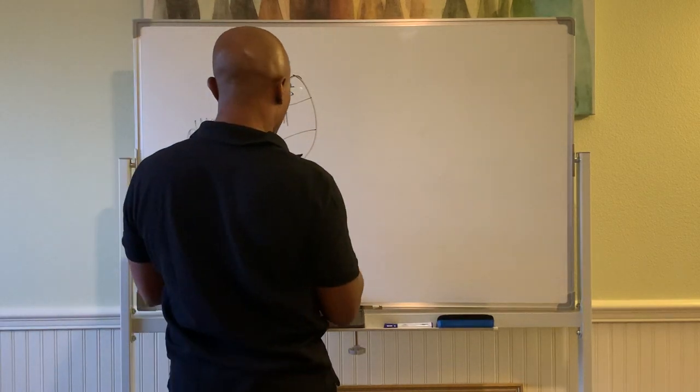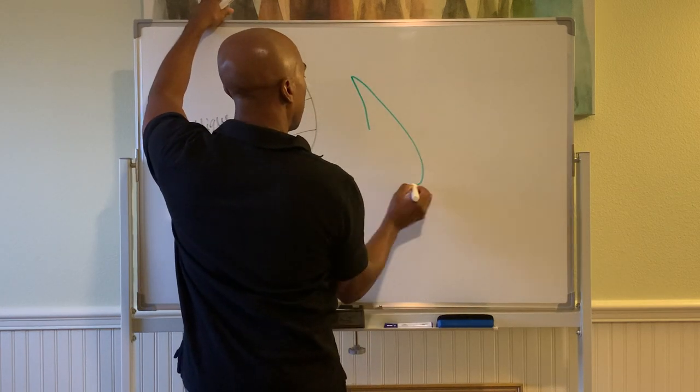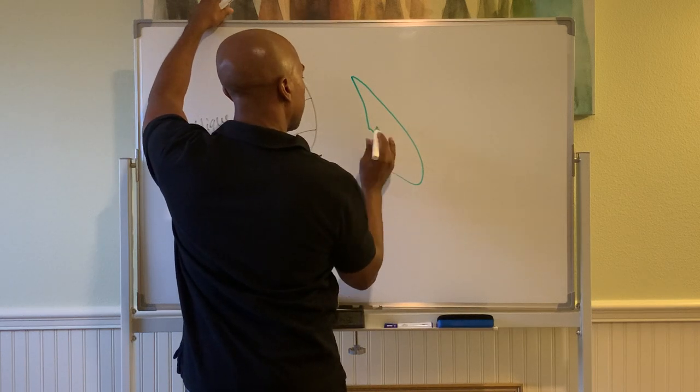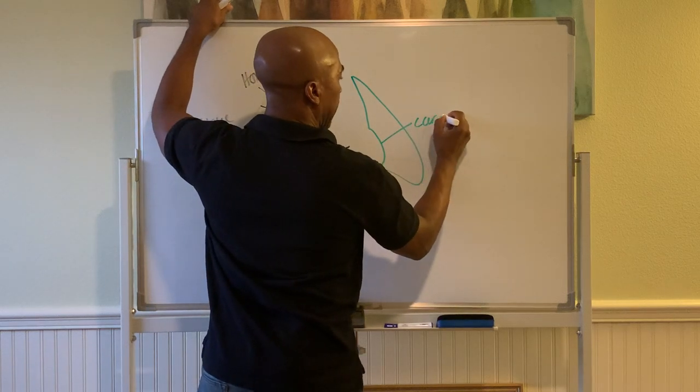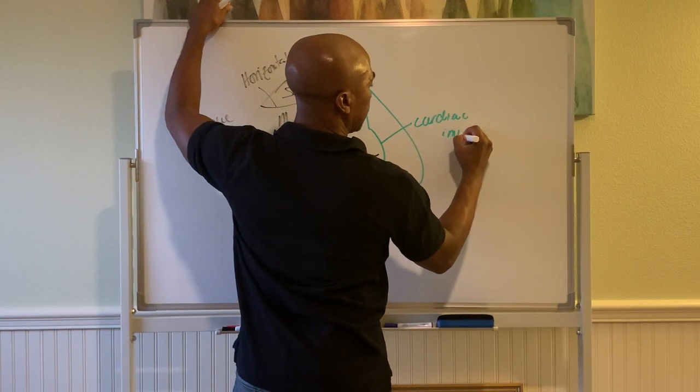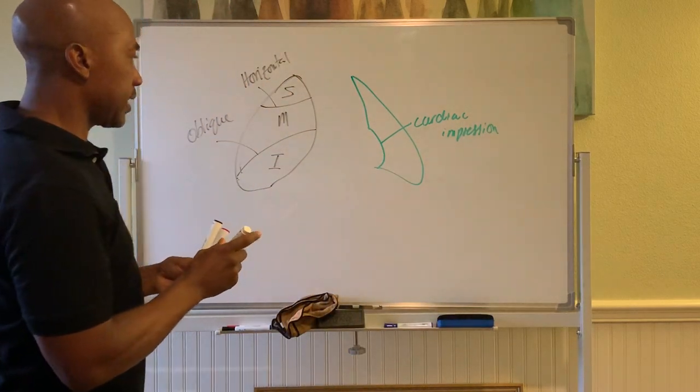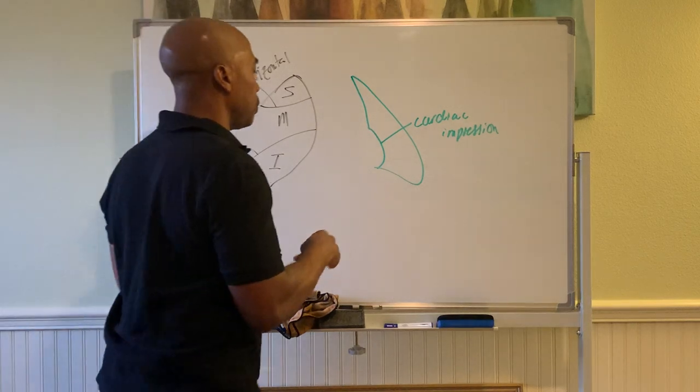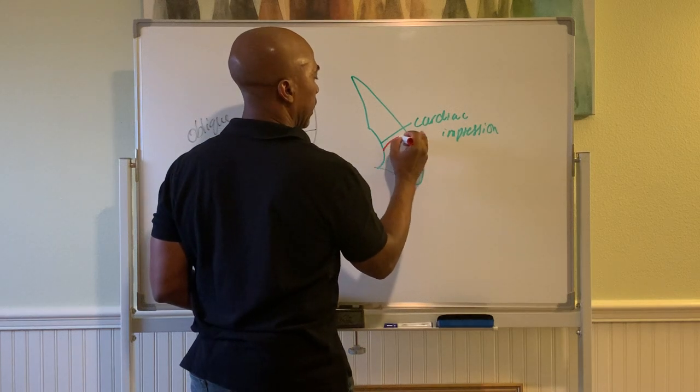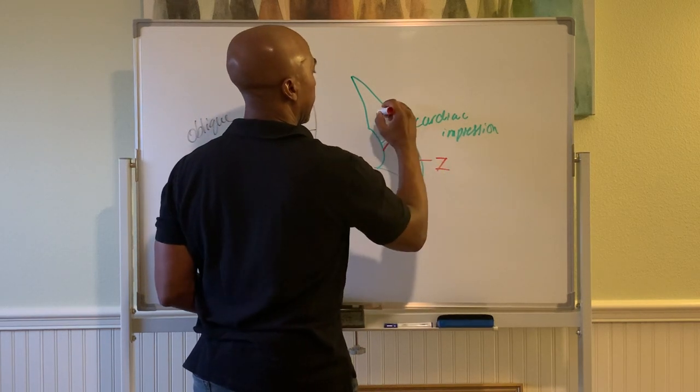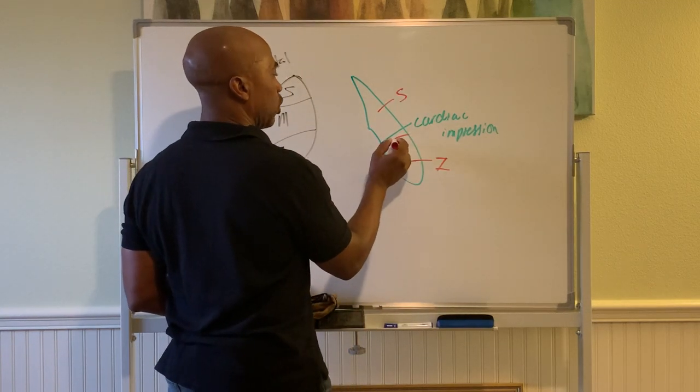The left lung, as we said before, is smaller. Where there's an area here called the cardiac impression, that's where the heart kind of sits there on the left side. And it has two lobes versus three: an inferior lobe and a superior lobe. The fissure is an oblique fissure.